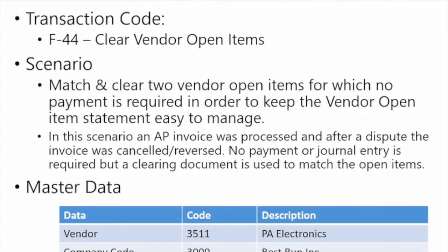Now that you've learned how to process a manual payment and clear or match an open item to a payment, I want to show you how to clear and match open items that do not need to be paid. The transaction code here is F-44, Clear Vendor Open Items. The scenario is we have two vendor open items but no payment is required — we want to keep the vendor open item statement easy to manage and not have these items clutter up the payment screen. In this case we've got an invoice that was processed but after a dispute with the vendor the invoice was cancelled or reversed, so no payment is needed and no journal needs to be posted, but we want to match these open items to clear them off. We'll use vendor 3511 and company code 3000.